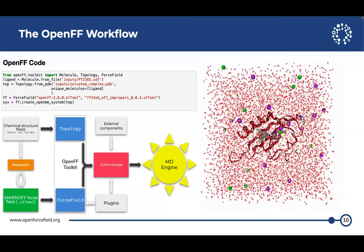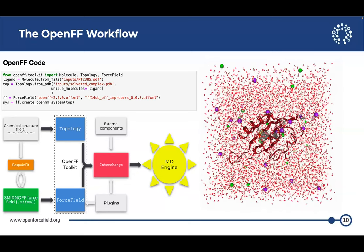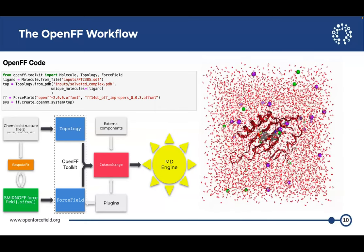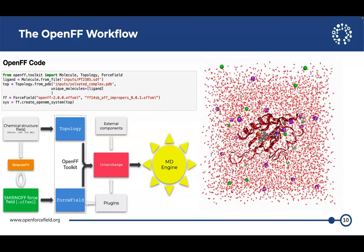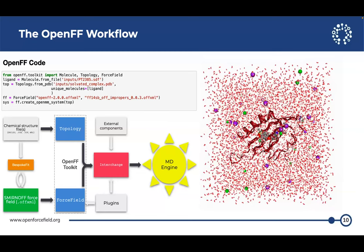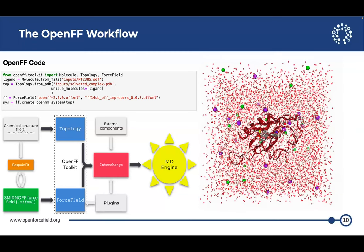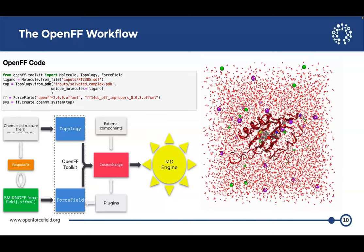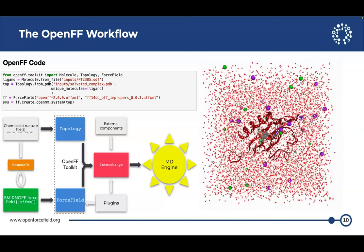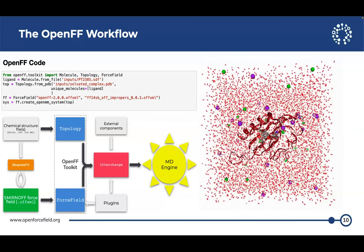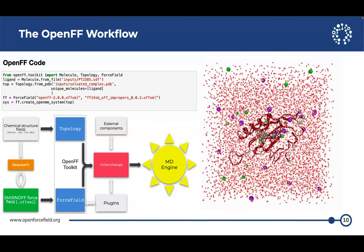The point is that in this code block, we have unique_molecules equals ligand, and there's more than one unique molecule — there's water, ions, and a protein. We have built-in recognition for water, ions, and proteins. It's just that when you come in with an exotic new species, you have to know its chemical identity and help us load the PDB by telling us about it.